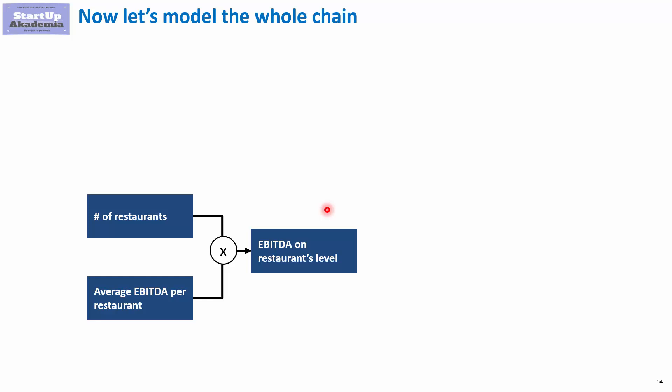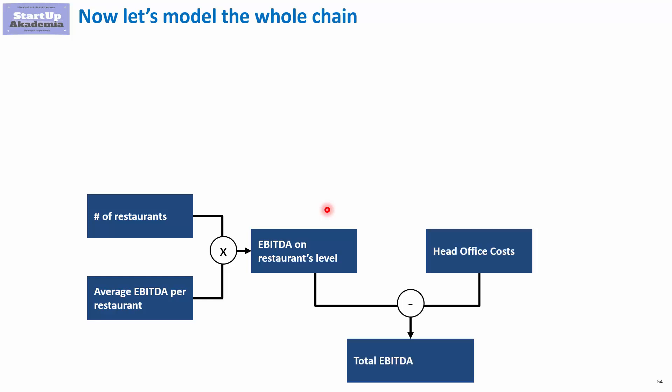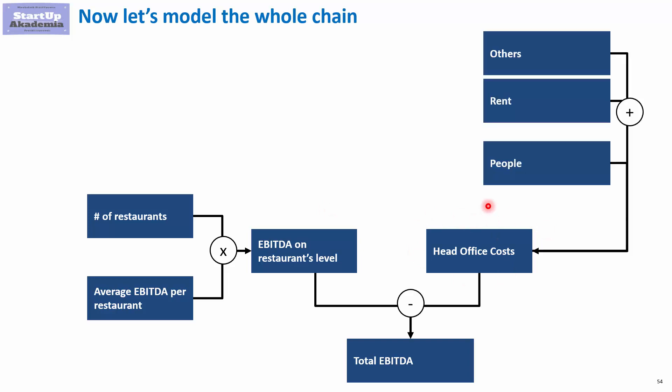In order to get to the EBITDA at the company level, we have to deduct the cost of the head office. Here we usually have two very important items: people and rent. The rest is simply others.